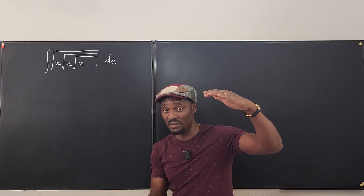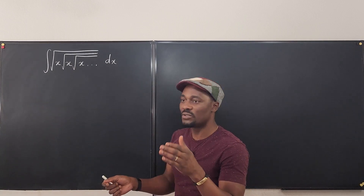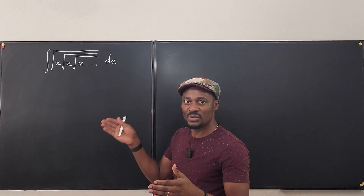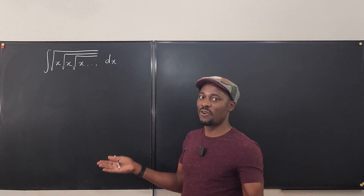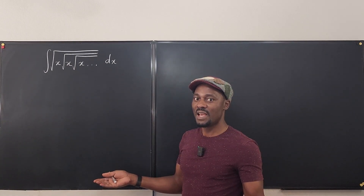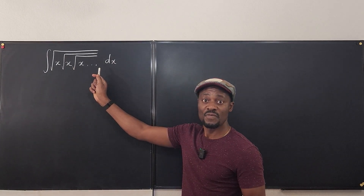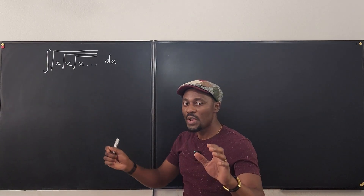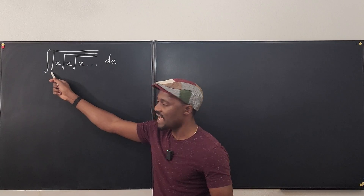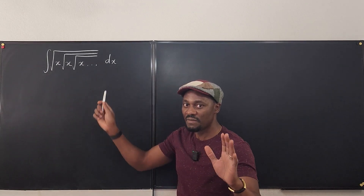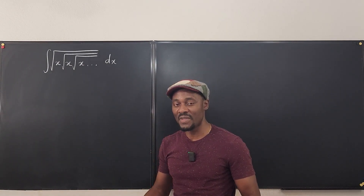That is, one is under the other. So you can't say it is square root of x times the square root of x times the square root of x — that would be easy. And it is infinite; it goes on forever. So let's try to simplify the integrand first and find another way to do it.